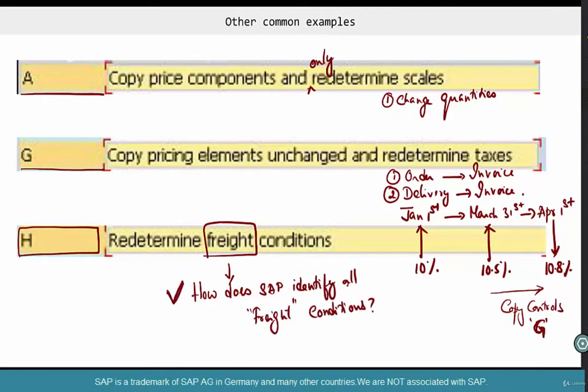The same logic applies for G. How does SAP identify all the tax condition types? The point I'm trying to make is, how does SAP group all these condition types and say, okay, I'm going to redetermine these and not something else? Let's base it on condition category and condition class.